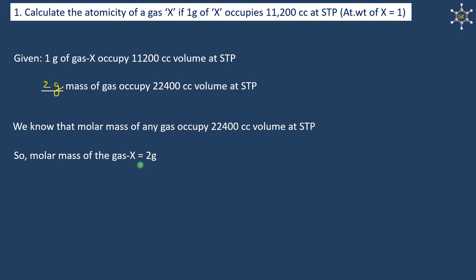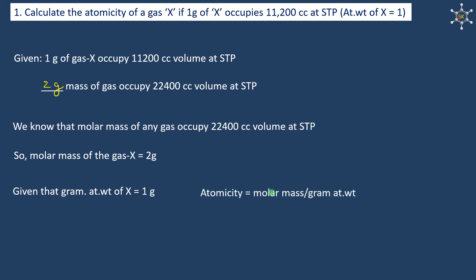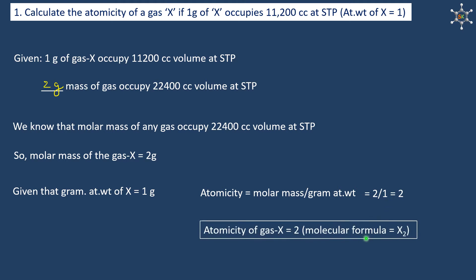The problem also gives us the gram atomic weight of X as 1 gram. Atomicity is given by molar mass divided by gram atomic weight, that is 2 divided by 1, which is 2. This means one molecule of gas X contains two atoms of X, so the molecular formula is X₂.